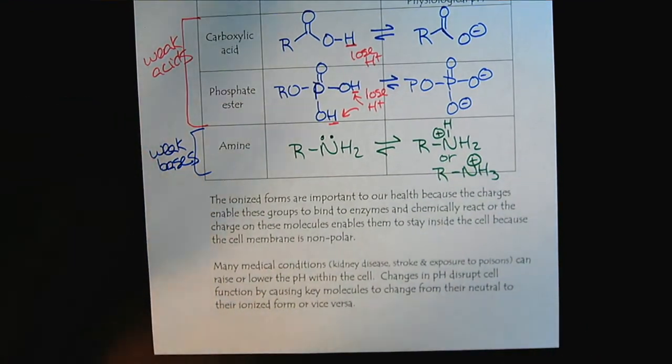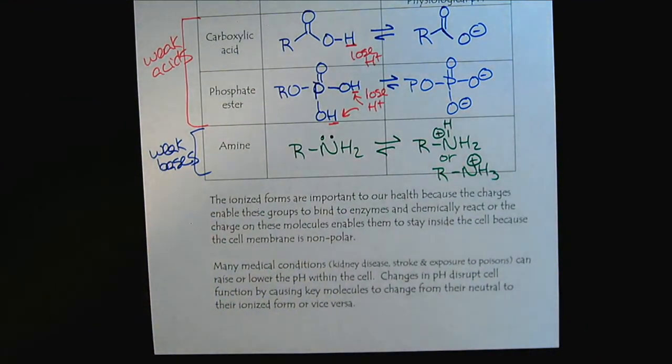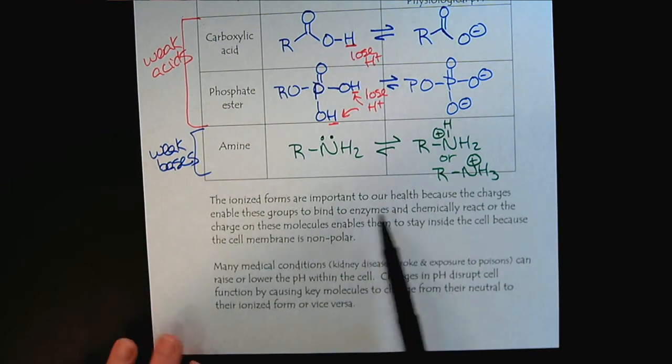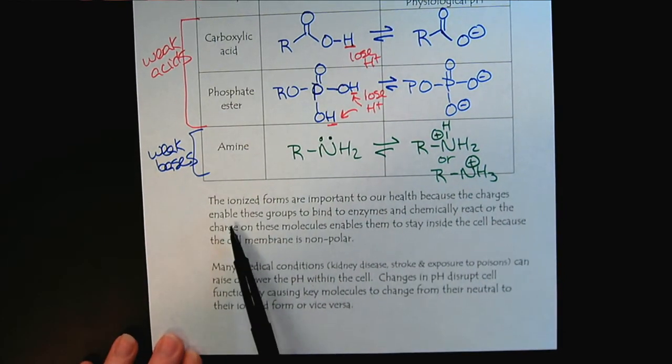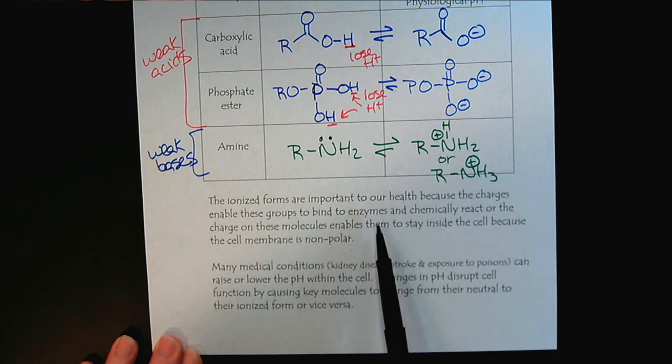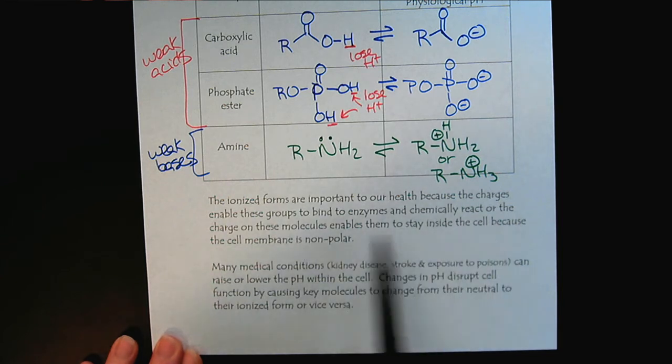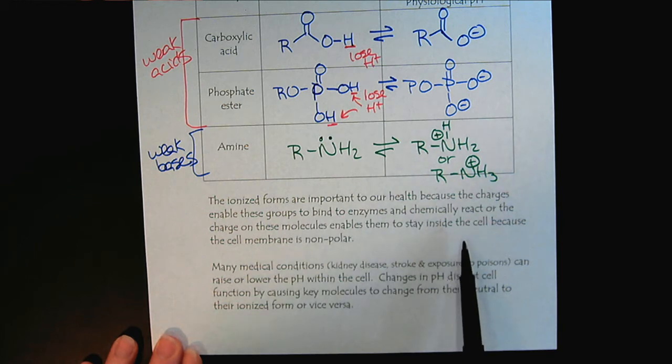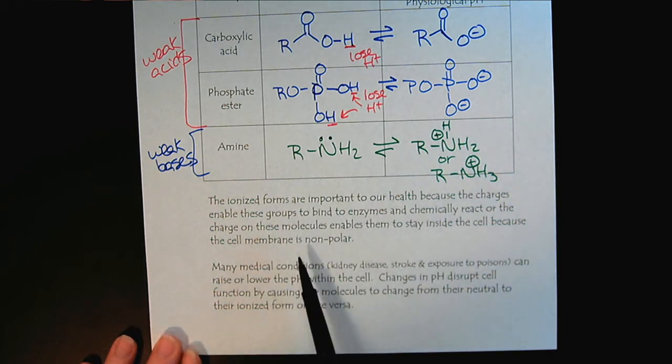Why is this important? The ionized forms are important to our health because the charges enable these groups to bind to enzymes, chemically react, or the charge enables them to stay inside the cell because the cell membranes are nonpolar. I just want to give you a context for where this knowledge will be useful to apply as wisdom.